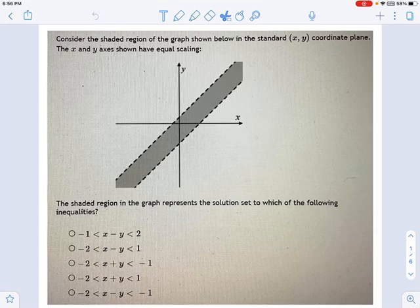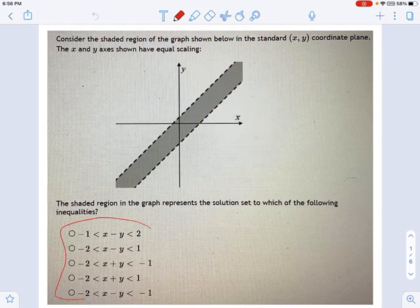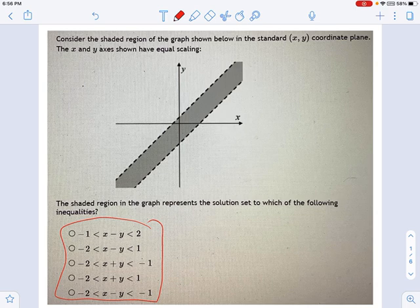Here's a graph of an inequality, and we're supposed to figure out what the actual inequality is that produced this graph. One of those inequalities creates this graph that we're looking at. Let's figure out which one.